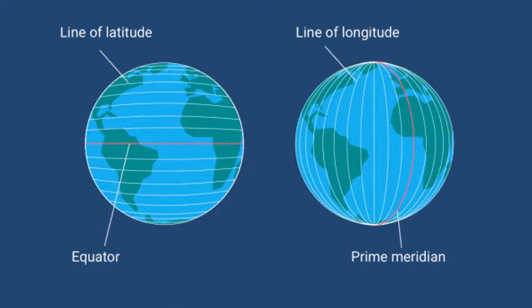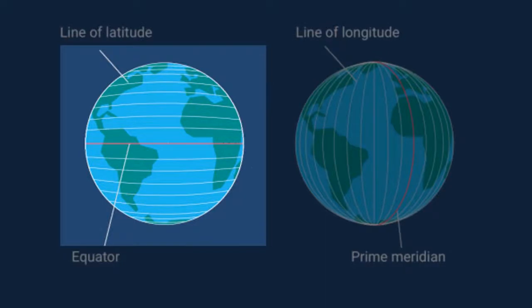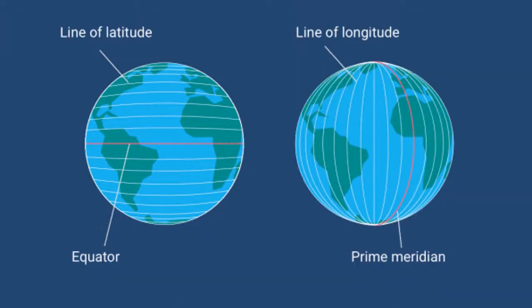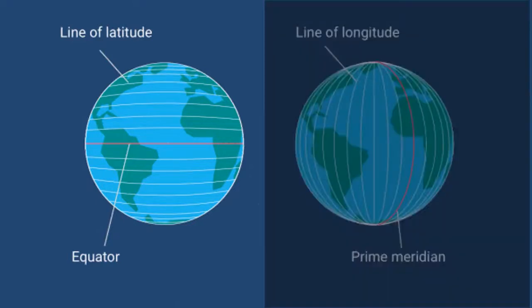Latitudes and longitudes are imaginary lines drawn on the earth. Latitudes are horizontal lines, whereas longitudes are vertical lines. Latitudes are parallel to the equator, and the equator itself is a latitude — that is, zero degree latitude. There are totally 180 latitudes besides the equator: 90 in the northern hemisphere and 90 in the southern hemisphere. Latitudes help in dividing zones on the globe, like the temperate zone and the tropical zone.